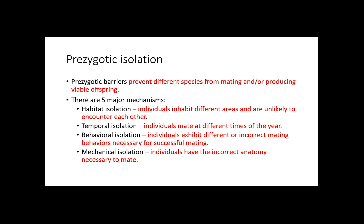Mechanical isolation is when individuals have the incorrect anatomy necessary to mate. And gametic isolation is when individuals have incompatible gametes.